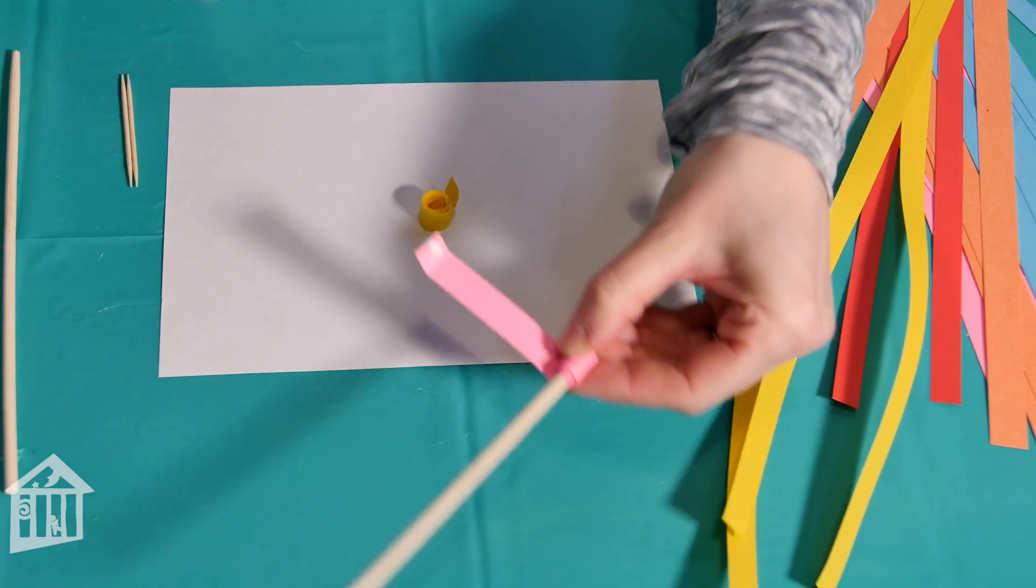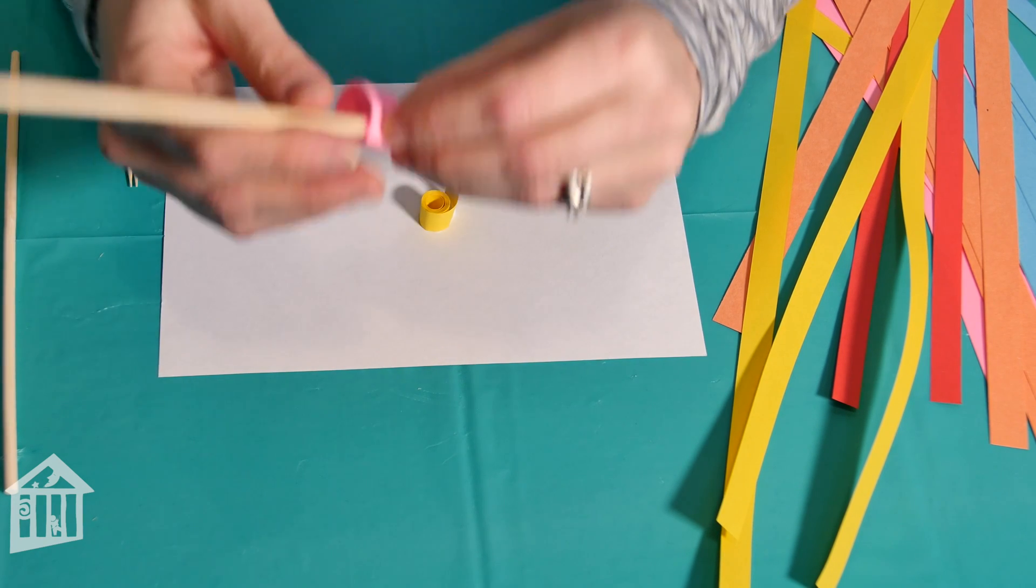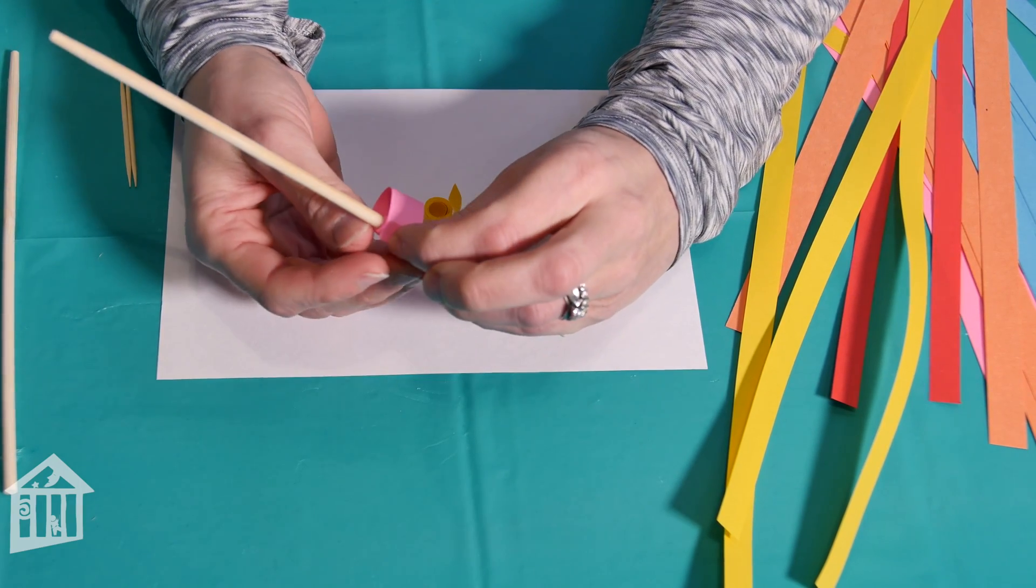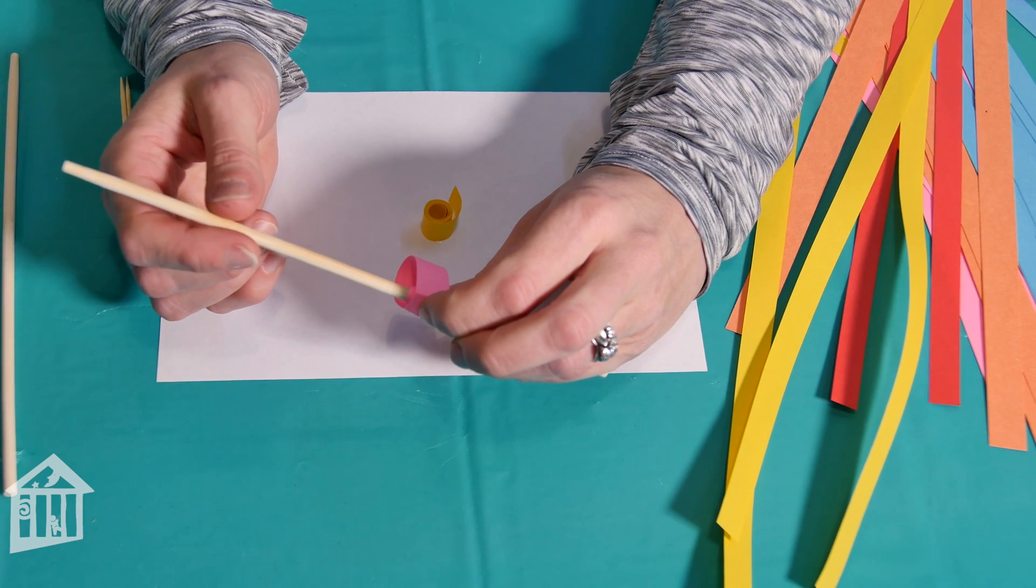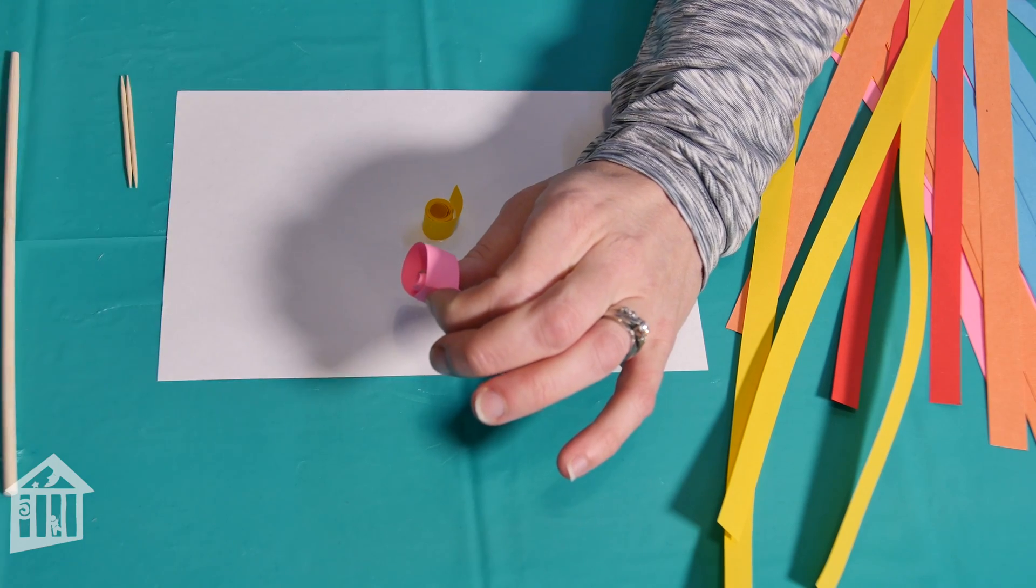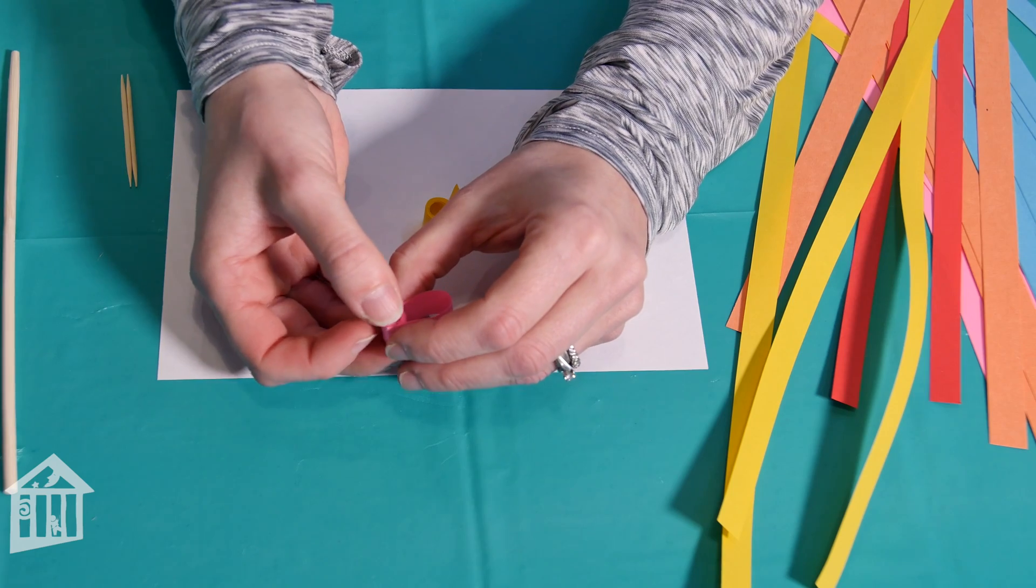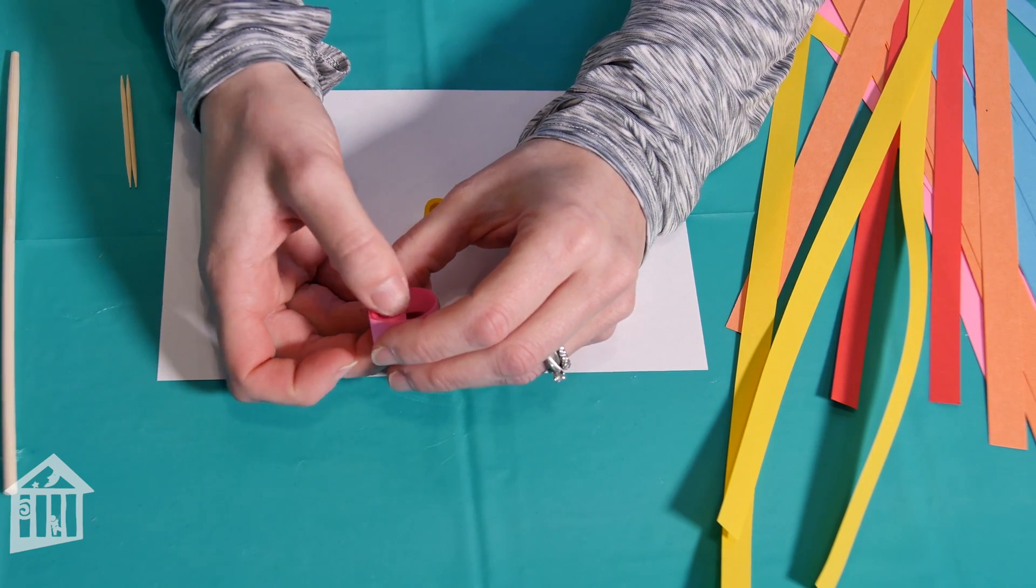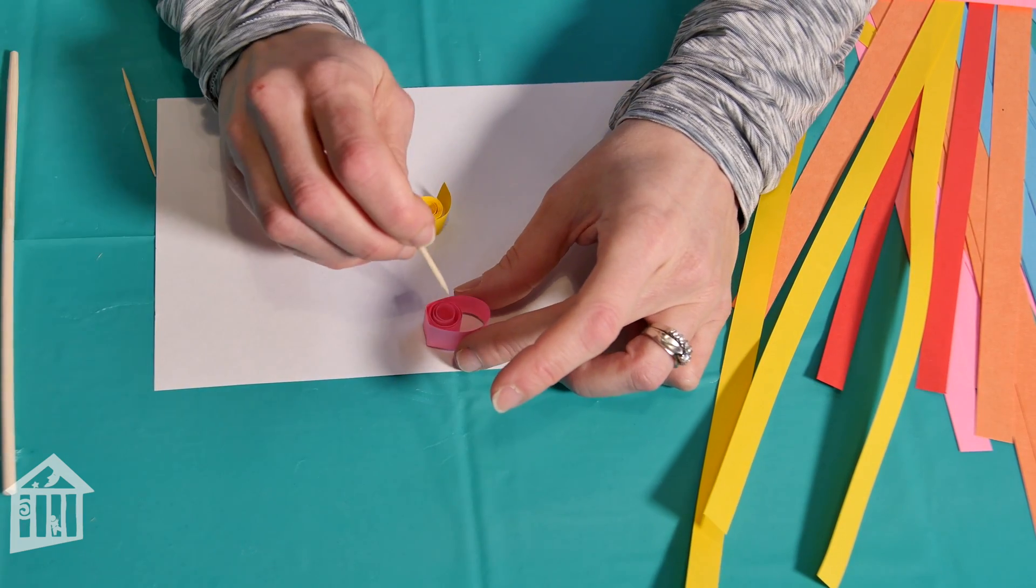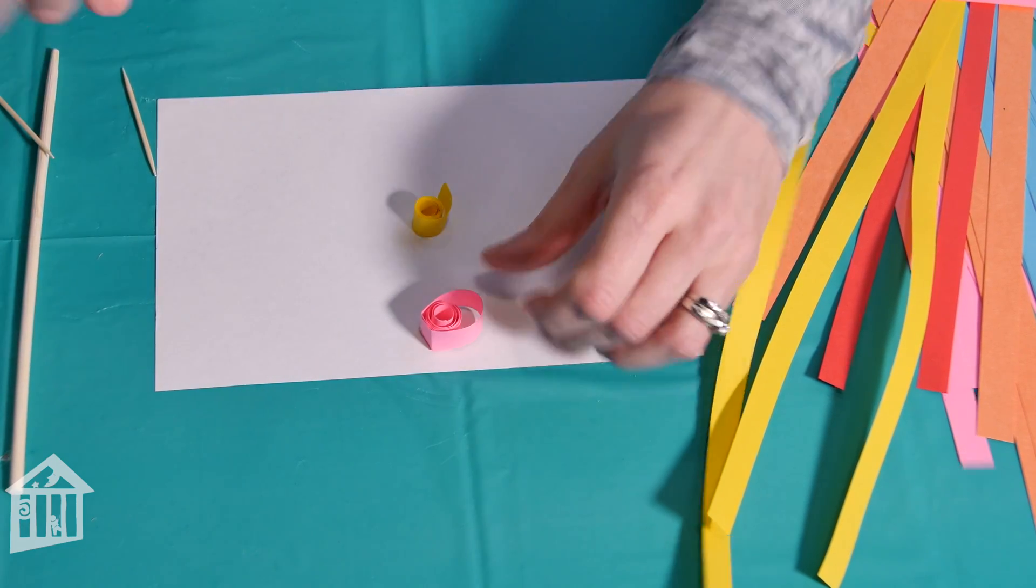Add some glue to that tab and attach it to the outside of your petal. Hold it in place for five or ten seconds then gently slide it off of your chopstick. Let a little bit of that coil go just to get a little bit more effect and there's your petal. If you want you can loosen your petal just a little bit more before you glue it onto your paper.